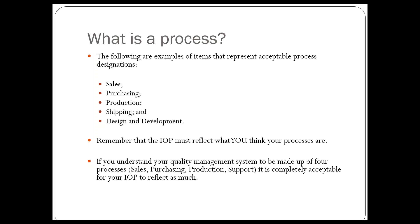In terms of what we typically see as process designations, this list was drawn from many past audit packages. The ones we see most often include sales and purchasing, production, shipping, and design development. It's important to remember that an interaction of processes has to reflect what you think your processes are. If you have a simple quality management system made up of four processes — say sales, purchasing, production, support — it is absolutely acceptable for your interaction of processes to reflect as much.